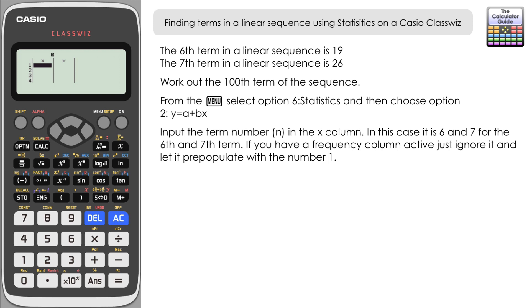We've got options here for X and Y. Depending on how recently you've used this mode, you may also have a frequency column. If you've got frequency switched on for statistics mode, just ignore that—just let it pre-populate with the number 1. In X, we're going to represent our n, so our terms in the sequence. We know that we've got the sixth and the seventh term, so we're going to input 6 and 7. The Y is going to represent our actual terms in the sequence, so in this case the sixth term is 19 and the seventh term is 26.